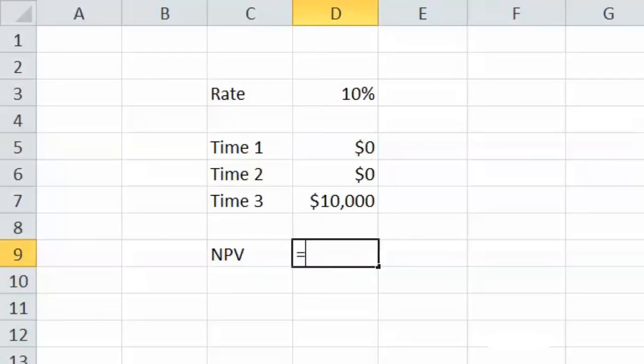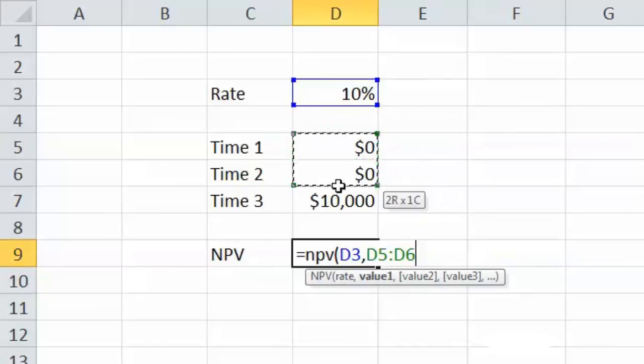Put equals, NPV, parentheses, click on the cell which includes the rate, comma, select the three cash flows at time one, time two, and time three.